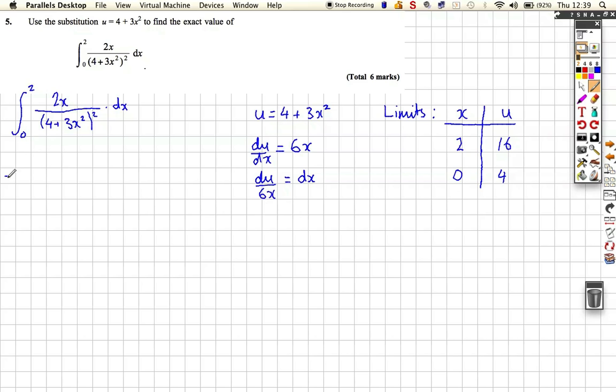So we can rewrite our integration, instead of from 0 to 2, we can write it from 4 to 16, because we're moving from x to u. We've got 2x, we really want to get rid of that 2x, but let's just leave it there for the moment. And we've got 4 plus 3x squared on the bottom, all squared, so that's u squared.